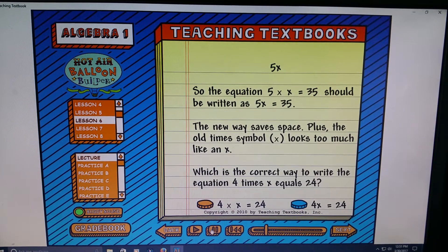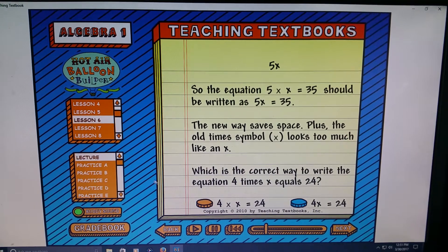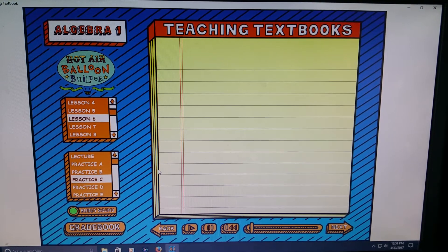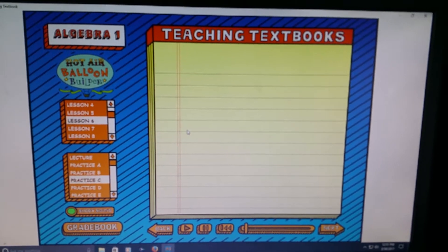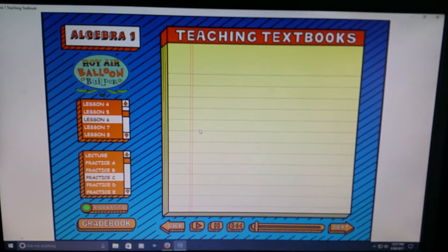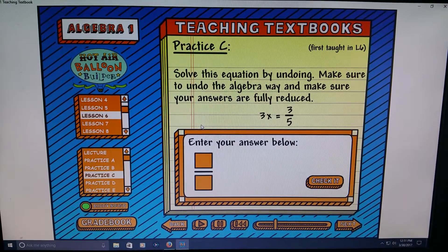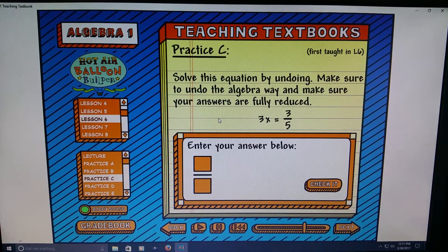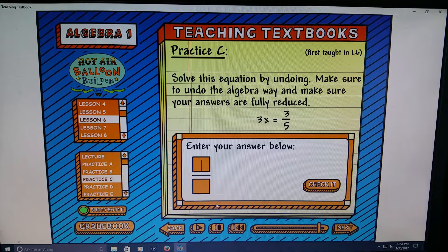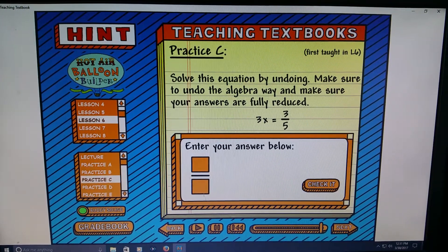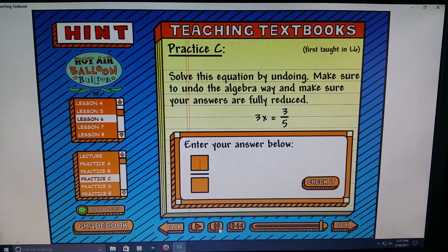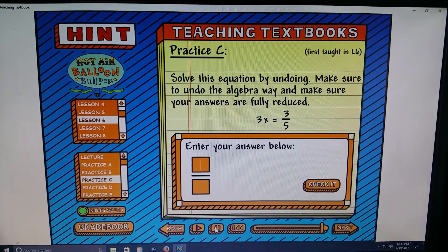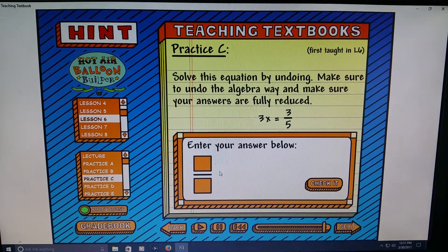So I'll just pause it. Okay, so then if you want to do the practice, you need to solve this equation by undoing 3X equals three-fifths and make sure to undo the algebra way. Time out for a hint. And then it gives you little hints you can click on if you want it, if you need it. So anyway, that's just an example.